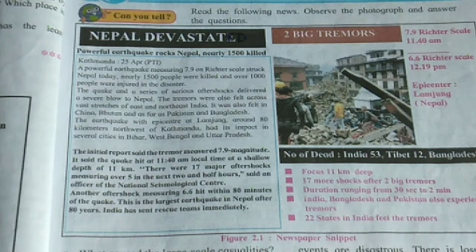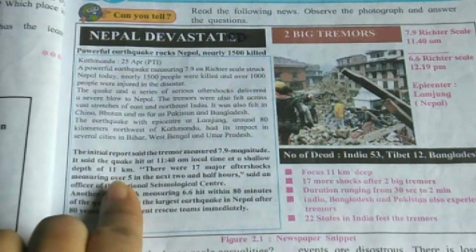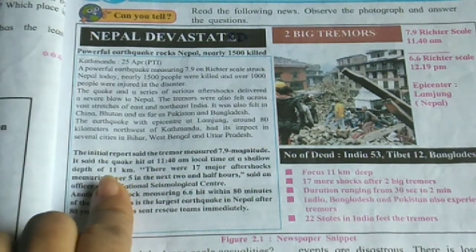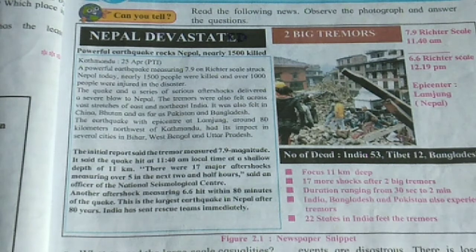Question: At what depth was the focus located? The focus of the earthquake was located at a depth of 11 km. Question: What kind of damage was caused by the earthquake? Nearly 1500 people were killed and over 1000 people were injured in this disaster.